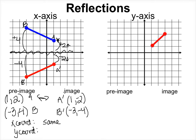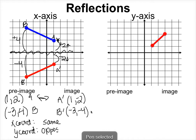The x-coordinate stays the same. For the y-coordinate, if it was 2 it becomes −2 — but if we reflected the other way and it was at −2, the new point would be at +2. So it doesn't always become negative. What we write is: the y-coordinate becomes the opposite of what it was — positive becomes negative, negative becomes positive.